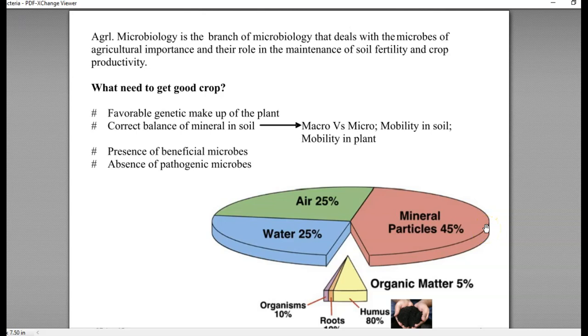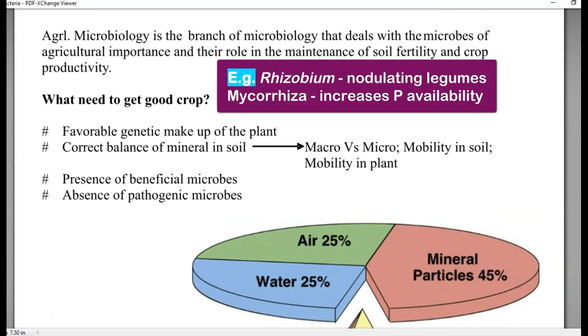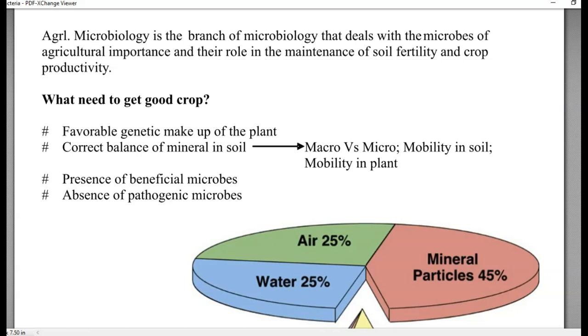Agricultural microbiology is a branch of microbiology that deals with the microbes of agricultural importance and their role in maintenance of soil fertility and crop productivity. How much they can make the soil fertile and how much they can make the productivity of the crop.